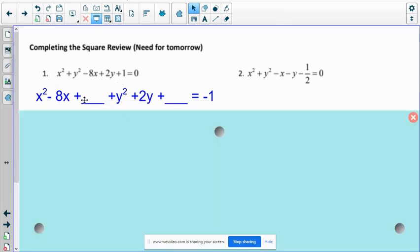So notice I put this blank line here is because when you complete the square, you have to find that magic number. And you do that by taking the middle number, so in this case 8, dividing by 2 and squaring it. So 8 divided by 2 is 4. 4 squared is 16.